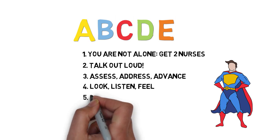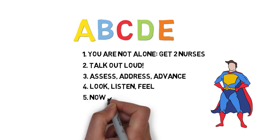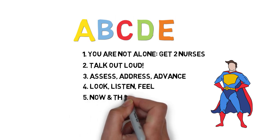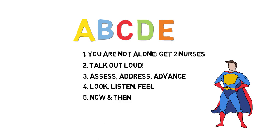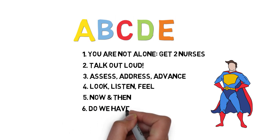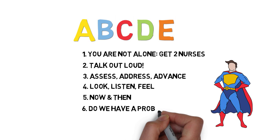Number five: Now and then. In every step, ask yourself, how is it now, and how will it be in a few minutes? This way, you can anticipate for problems to come. Number six: Do we have a problem? At the end of each step, you state whether or not you have a problem in that section. It helps you in knowing what to get back to.